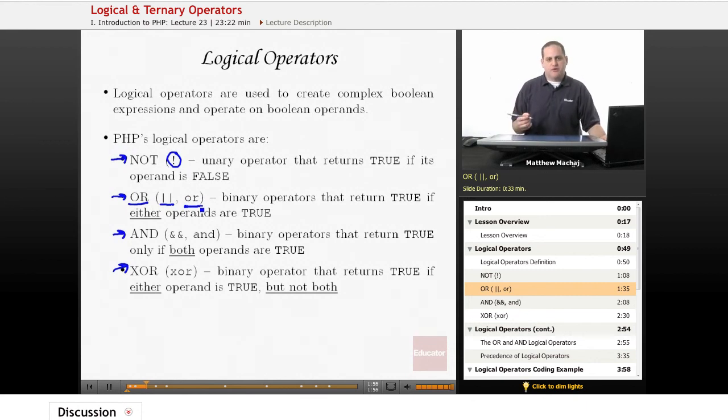This is a binary operator that returns true if either its left or right operand are true. It operates on two Boolean values. The only case it returns false is if both of its operands are false.